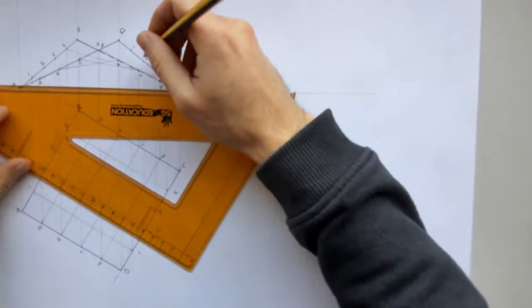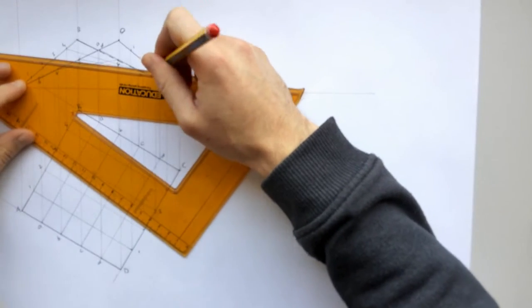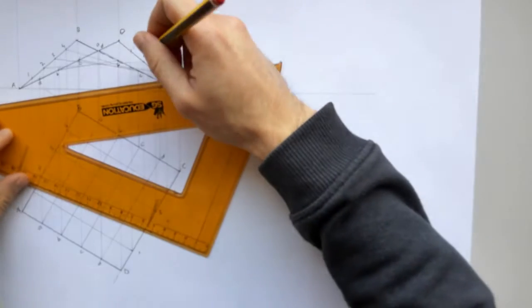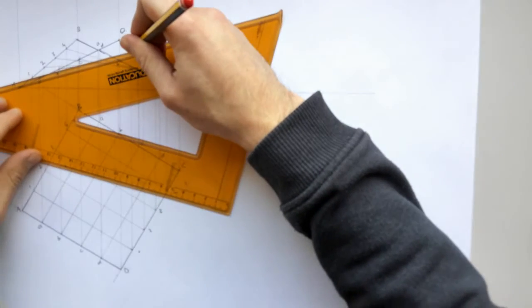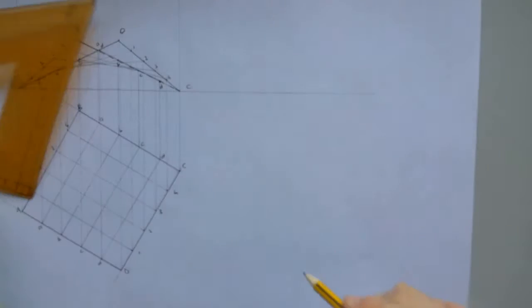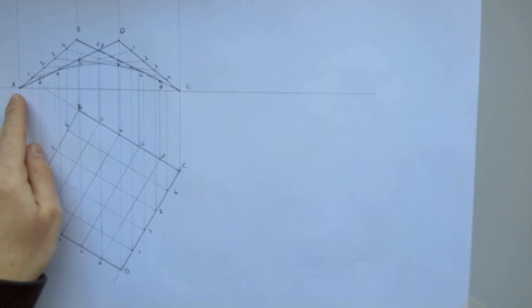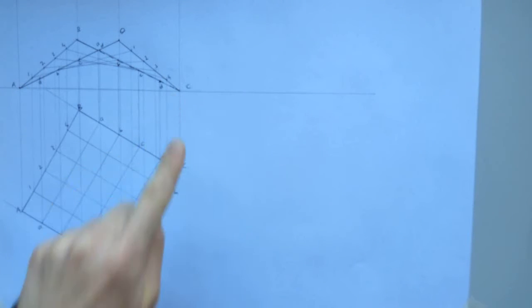4 will connect to 4 here. 3 connects to 3 there. 2 connects to 2 there. And finally 1 will connect to 1 there. And that's my elevation complete. You can start to see just by connecting the elements a curve is starting to form there naturally.